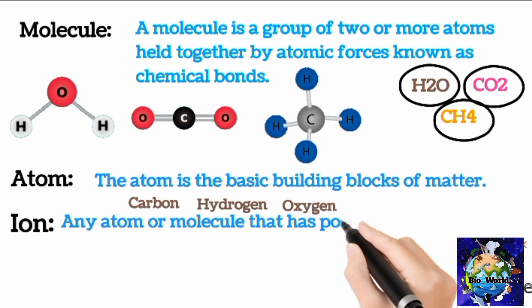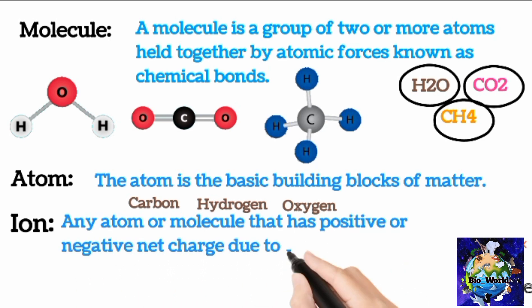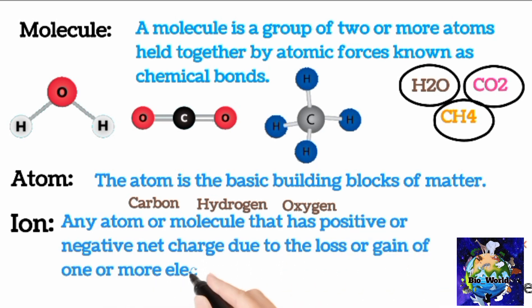Ion. Any atom or molecule that has positive or negative net charge due to the loss or gain of one or more electrons is called an ion. Hydrogen ion that has positive charge due to release of electron and chloride ion, it has negative charge due to gain of electron.